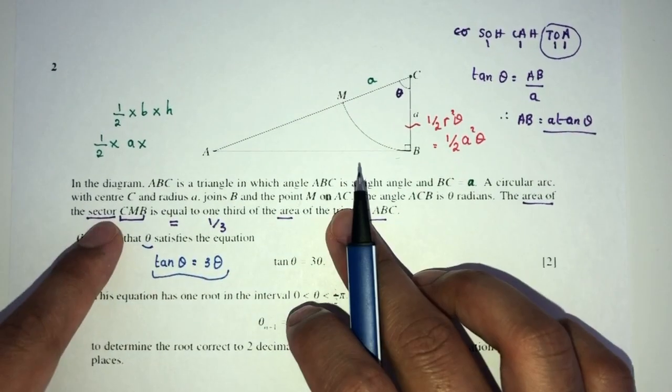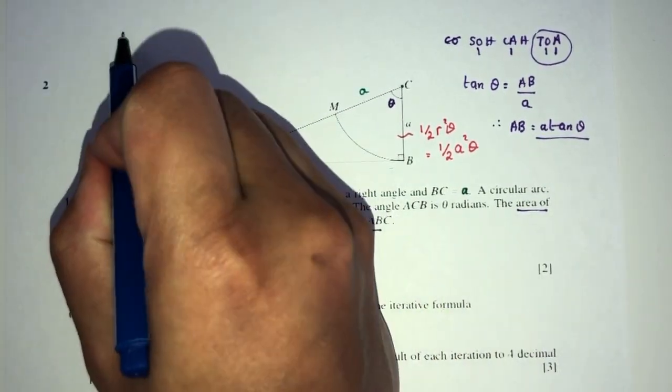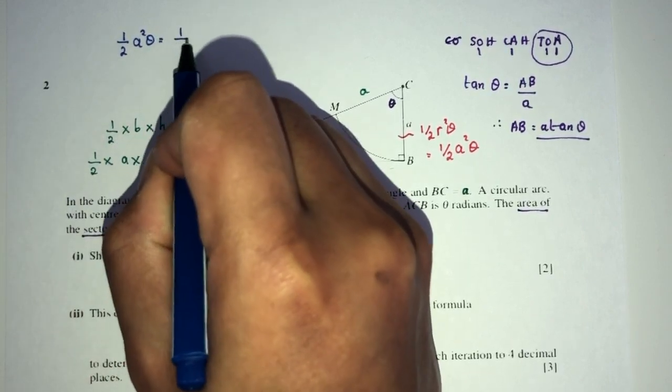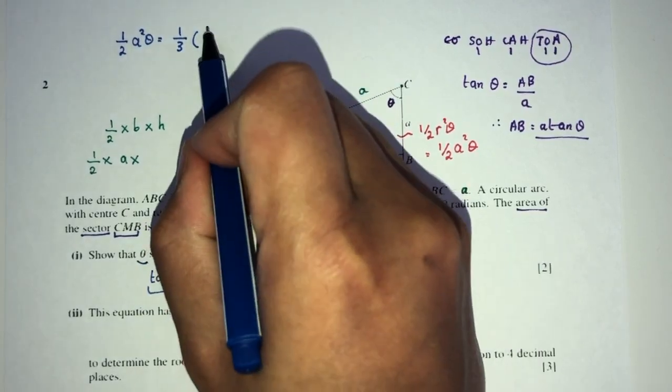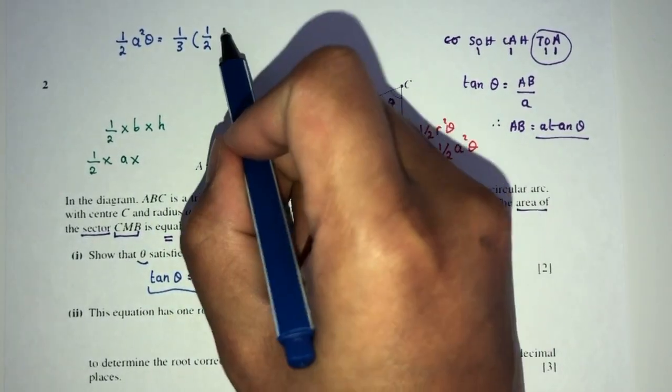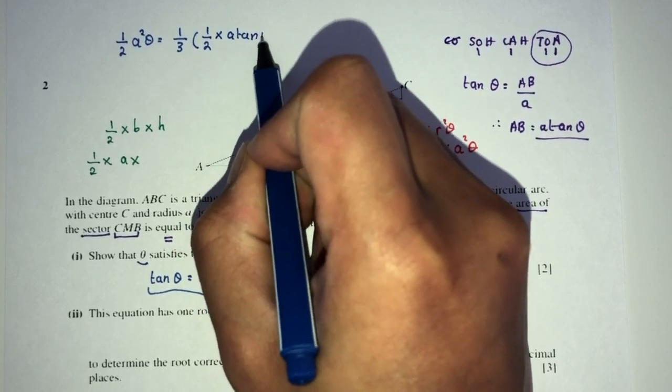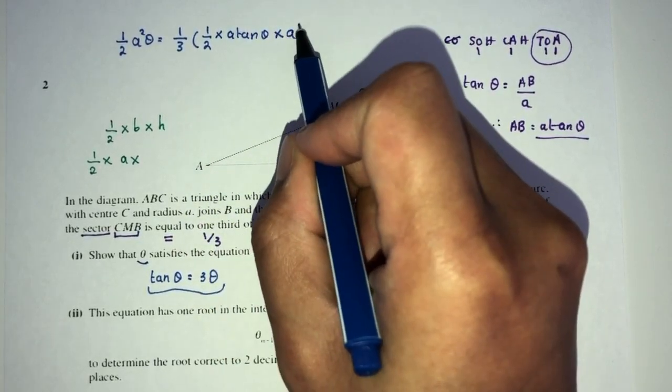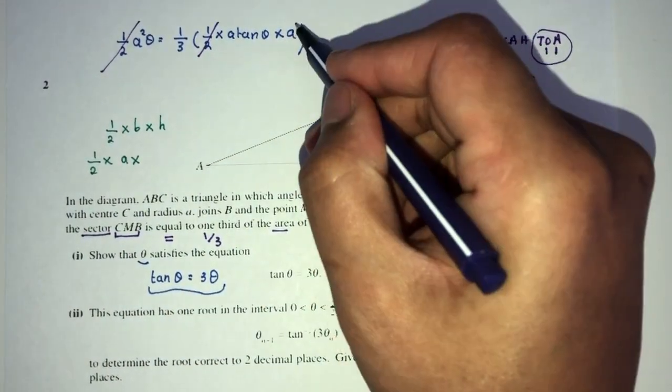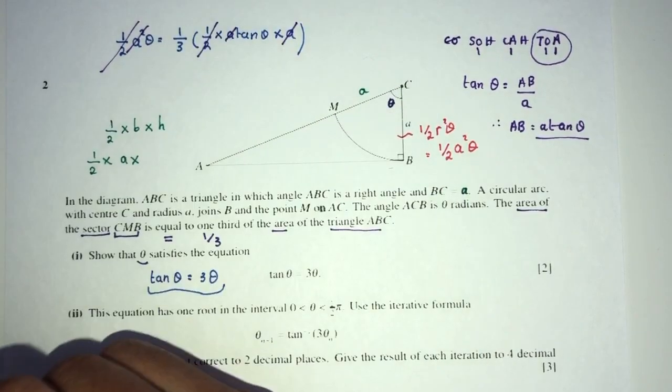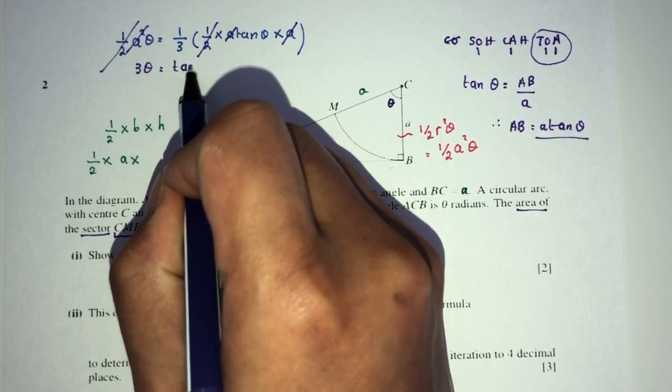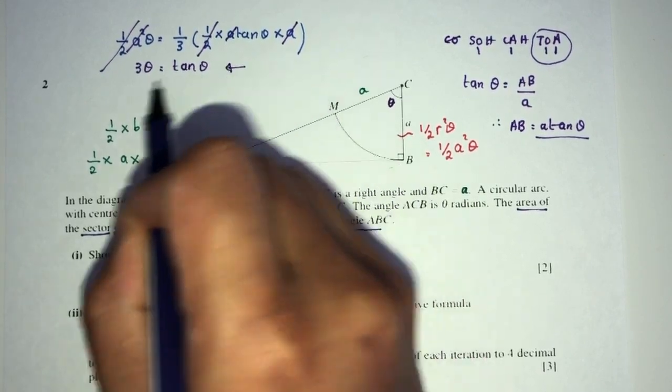For example, this is the main equation right here. So the area of the sector, which is ½A²θ, is equal to one-third times the area of the triangle, which is ½ times base, base is equal to A tan θ, times the height, which is A. Now, we can simplify, this ½ will go away. This will go away, A². And cross-multiply, you will have 3θ equals tan θ. This is shown as required, right here. So the idea behind is basically using this information to show this. Done. Two marks done.